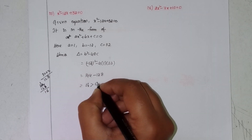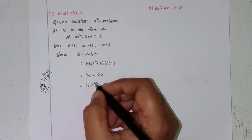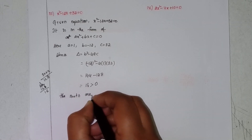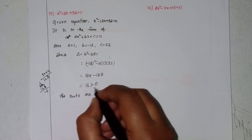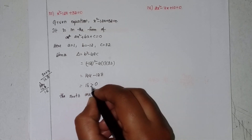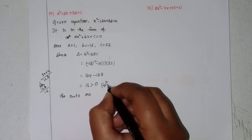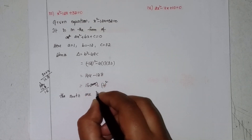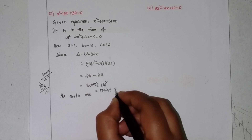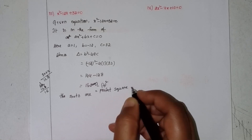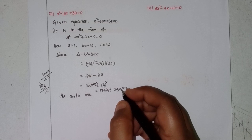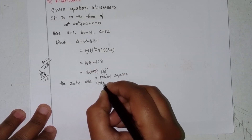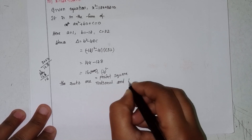16 is greater than 0. Also, 16 is a perfect square, in the form of 4². Therefore, the roots are rational and distinct.